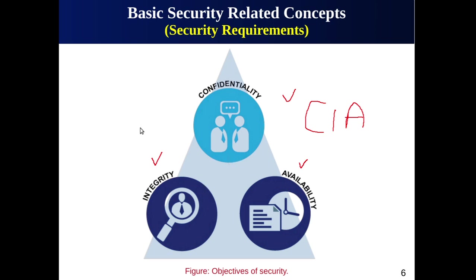Availability is the third component of information security. The principle of availability states that information should be available to authorized users at all times, and it is an important aspect of reliability. It tries to assure that authorized system users have timely and uninterruptible access to information, and that services are not delayed or denied to authorized users. There is a type of attack known as denial of service attack, which is becoming increasingly common and is an attack on the availability of data or the system.